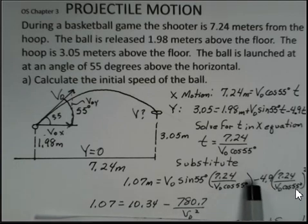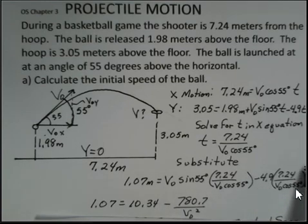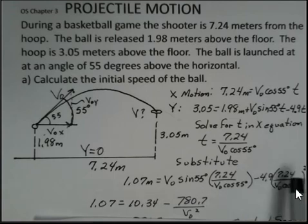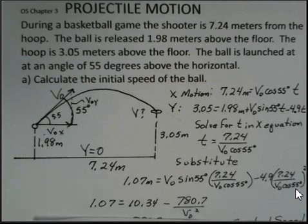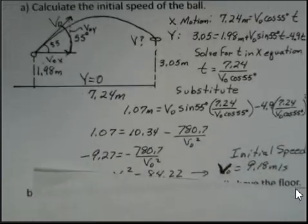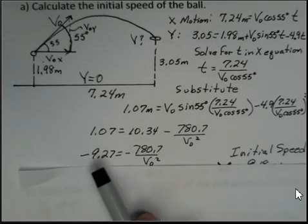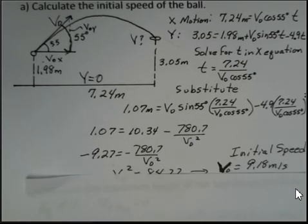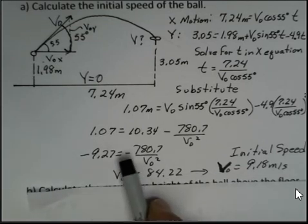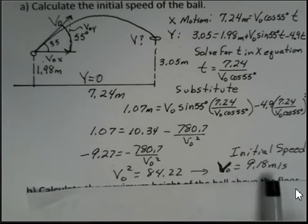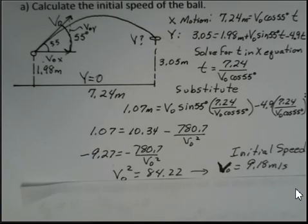The minus sign survives on the other term: 4.9 times 7.24 squared divided by the square of cosine 55 degrees. You may want to compute 7.24 divided by cosine of 55, square that result, then multiply by 4.9 — that gives 780.7. Subtracting 10.34 from both sides gives minus 9.27 on the left. Multiplying both sides by V0 squared and dividing by minus 9.27 — the minus signs cancel — gives V0 squared equals 84.22. Taking the square root, V0 equals 9.18 meters per second.